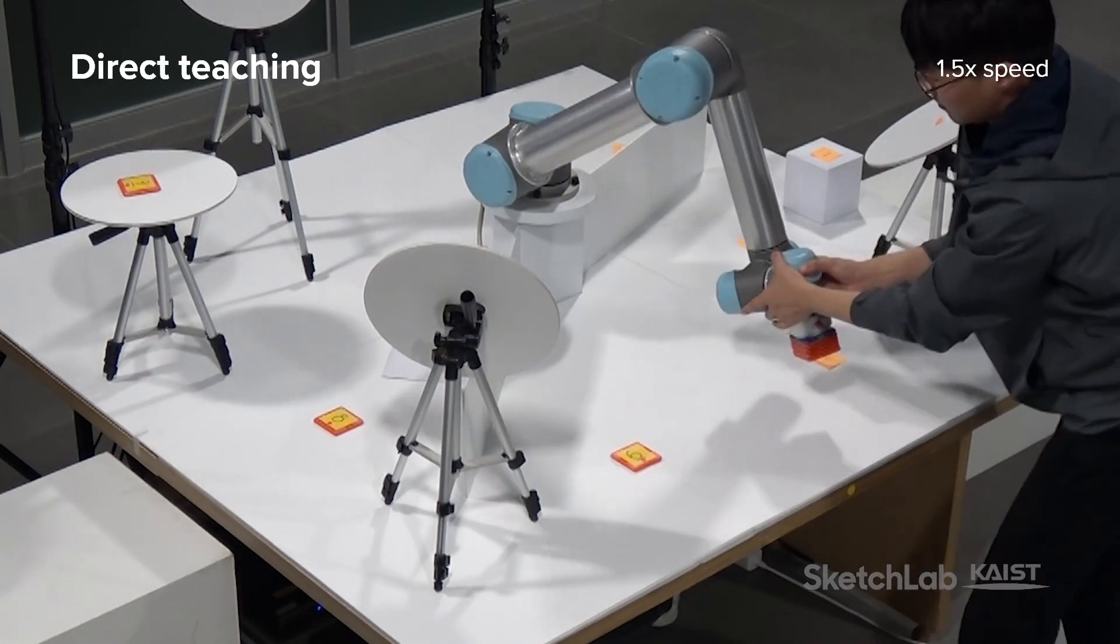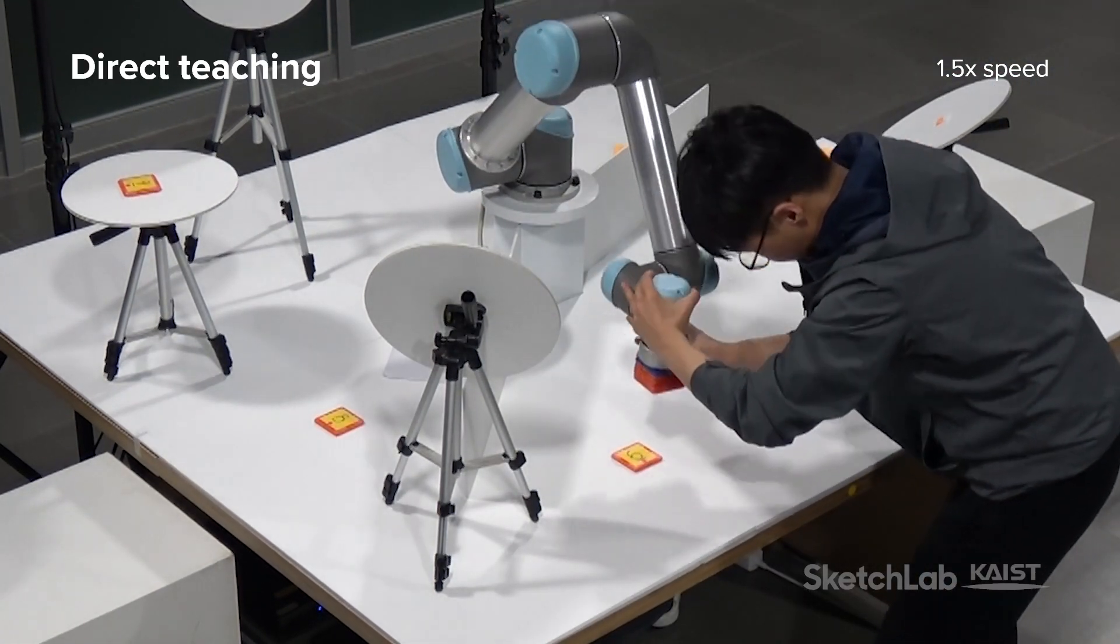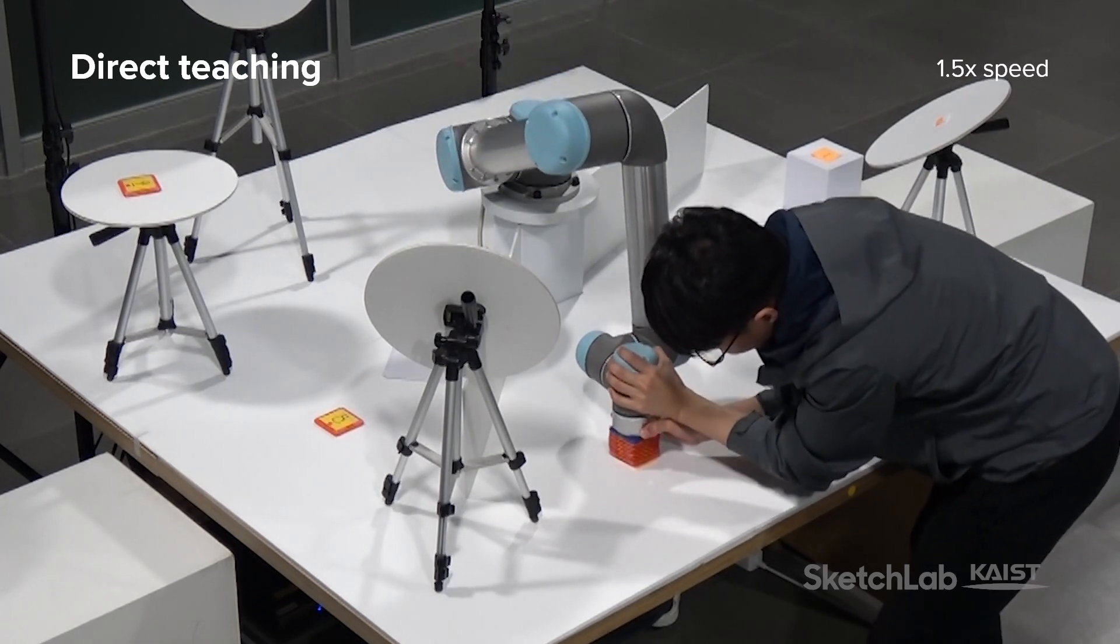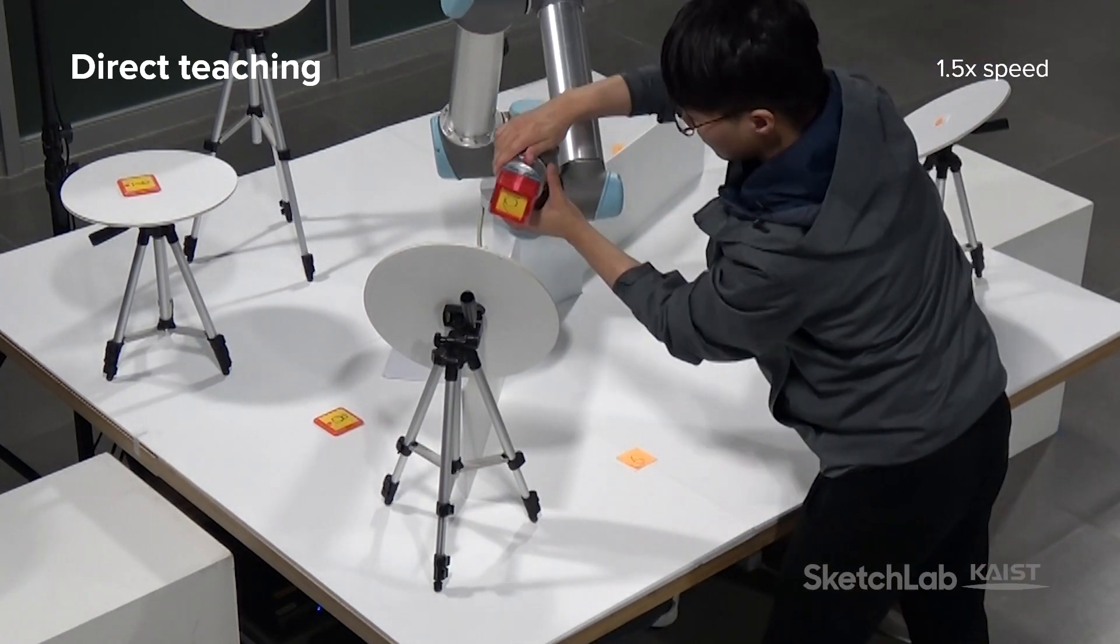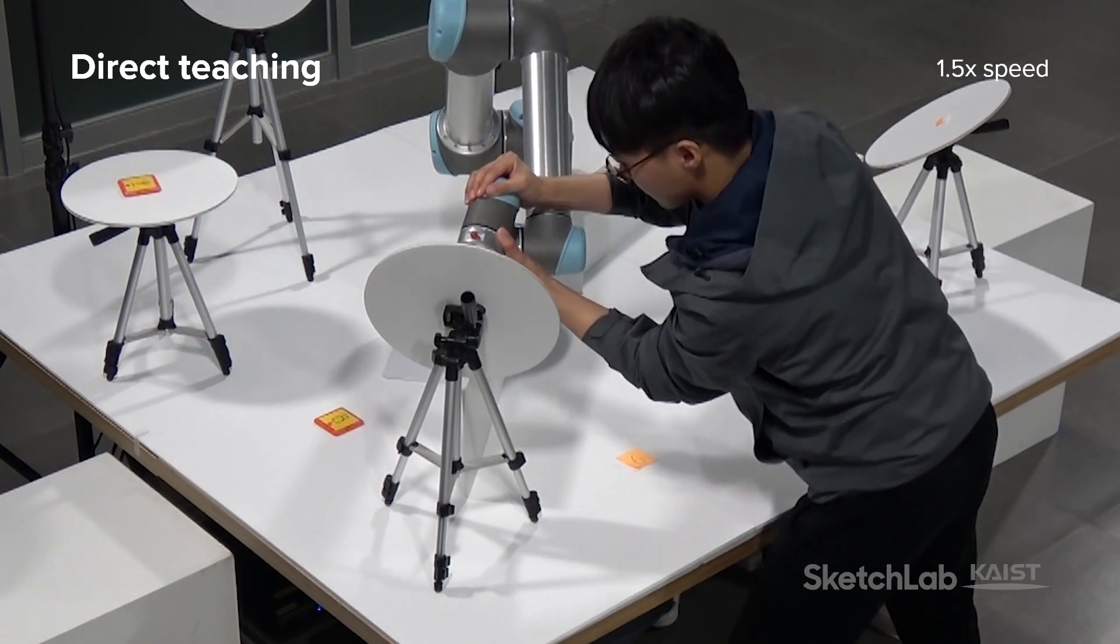Another common way is to use direct teaching. With direct teaching, the robot can be physically grabbed and moved by force. Direct teaching can be simpler and faster than button-based controllers.